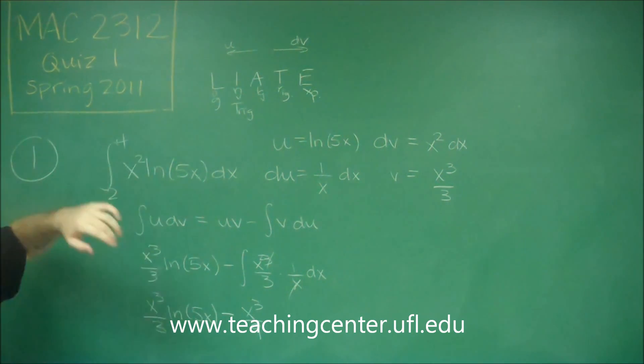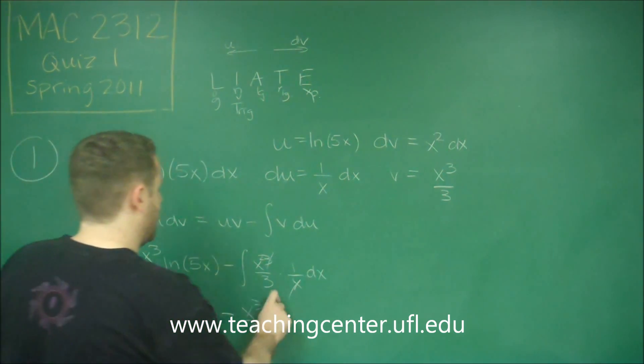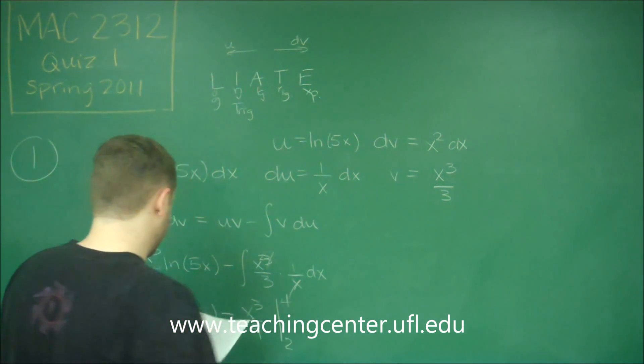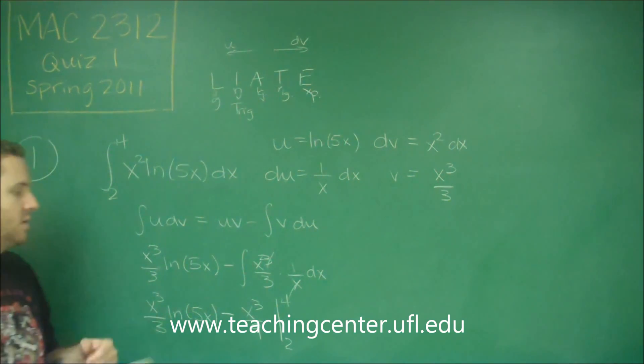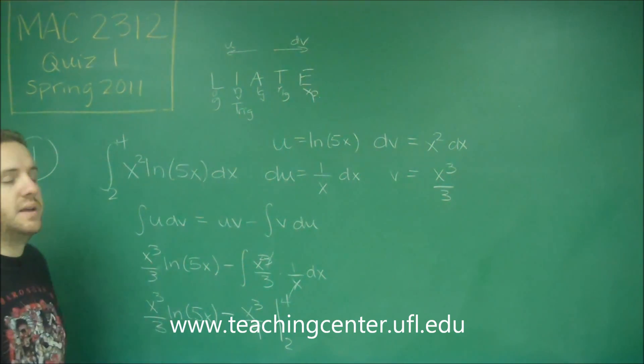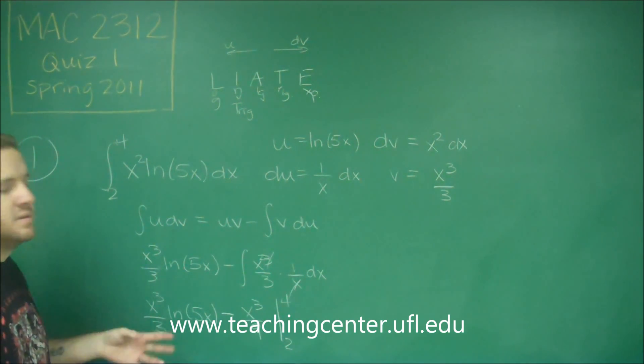Remember that this was a definite integral the whole time. I didn't bother writing it continually on all of these. So now that we have this, we need to evaluate this from 2 to 4. Of course, this is back just to doing, like in Calc 1, definite integrals. You always plug in the upper bound first, subtract the lower bound. So let's just do that real quick.